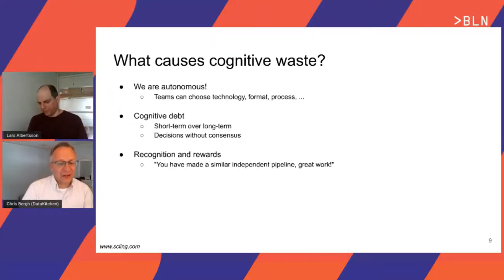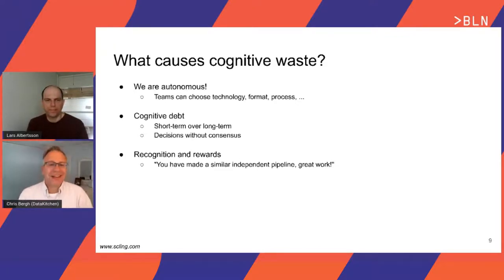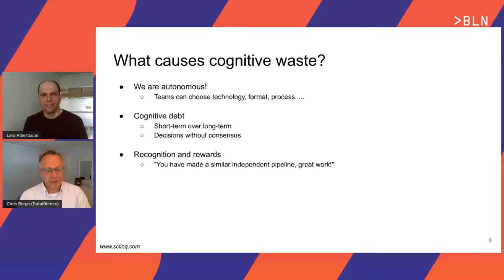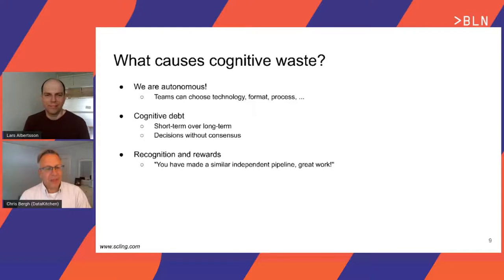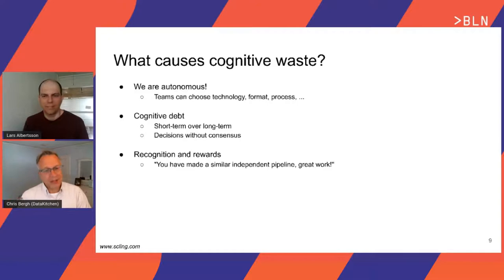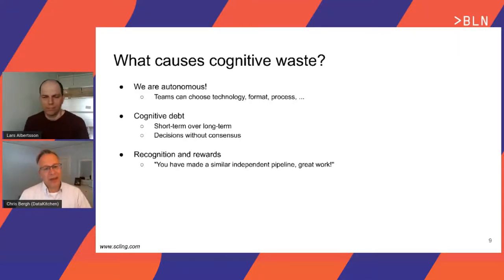There's the opposite too, where you've got rigid companies trying to make change hard in order to reduce the risk of error. In some ways, the idea of Lean or DataOps is the happy medium between potential chaos from autonomy and freedom, and the boot on your neck of control. How do you find the balance between those two?